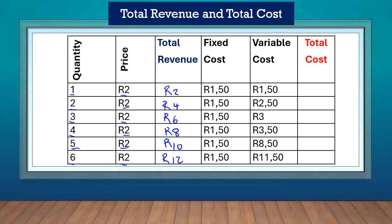Now let's come to cost. How do you work out the total cost? To get the total cost, you add your fixed cost to your variable cost.